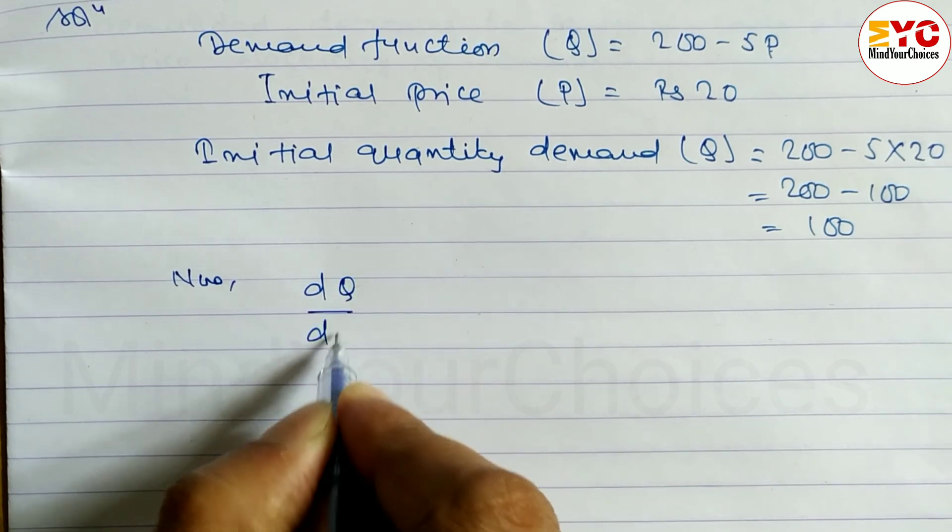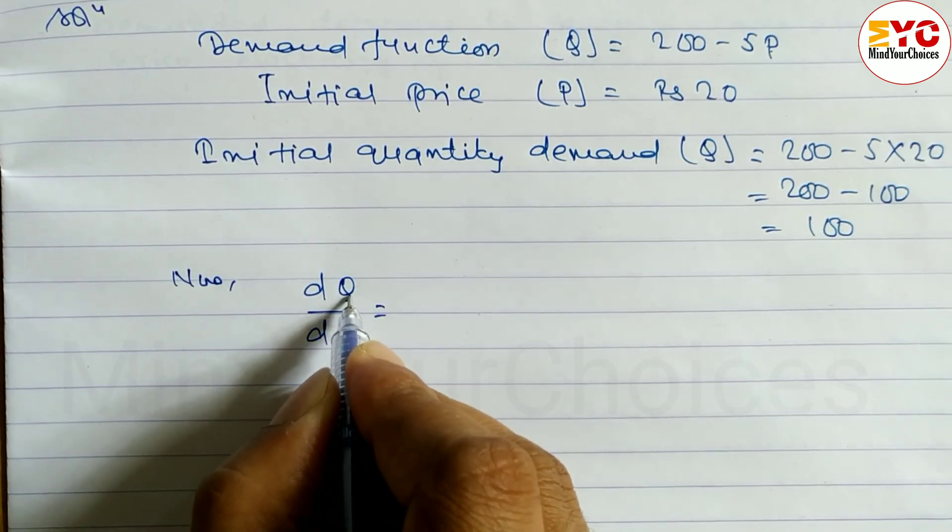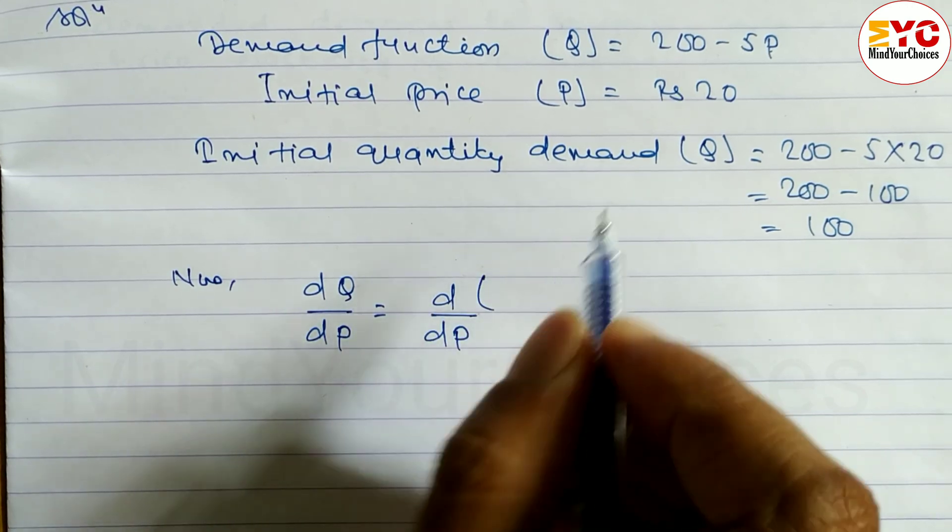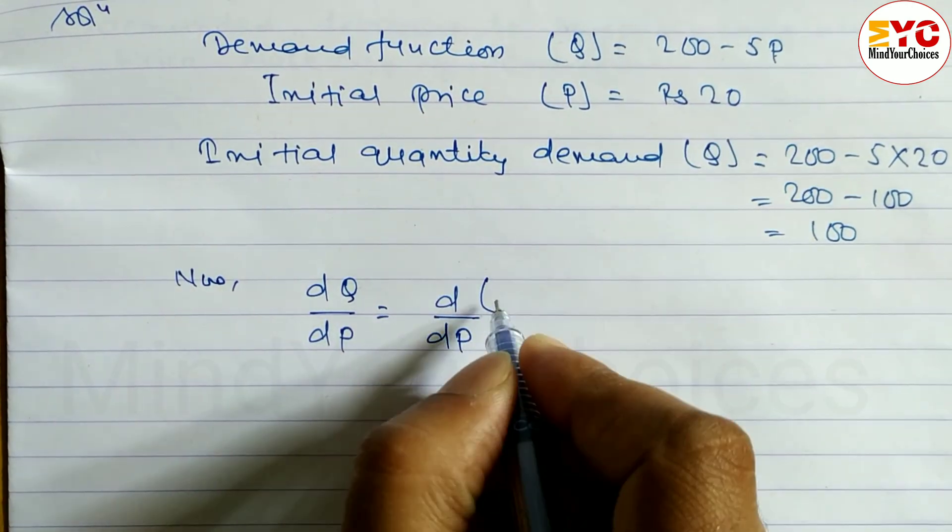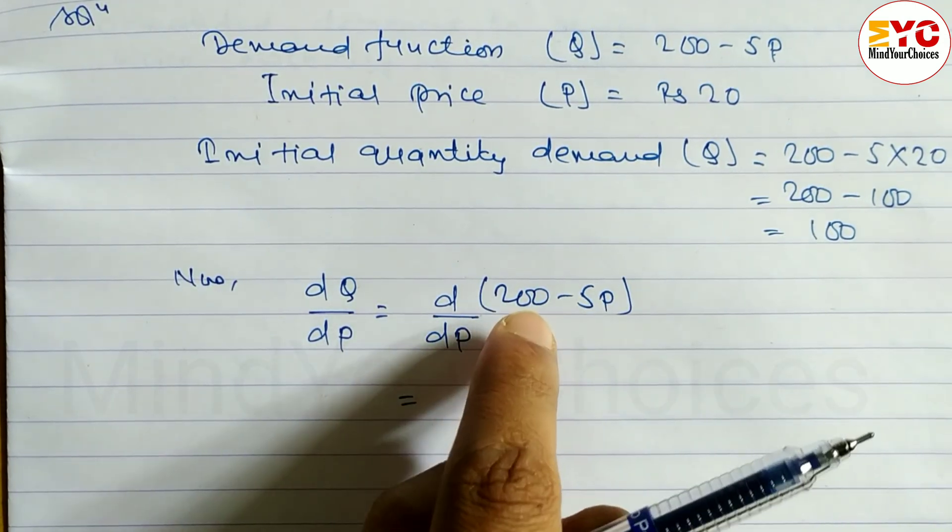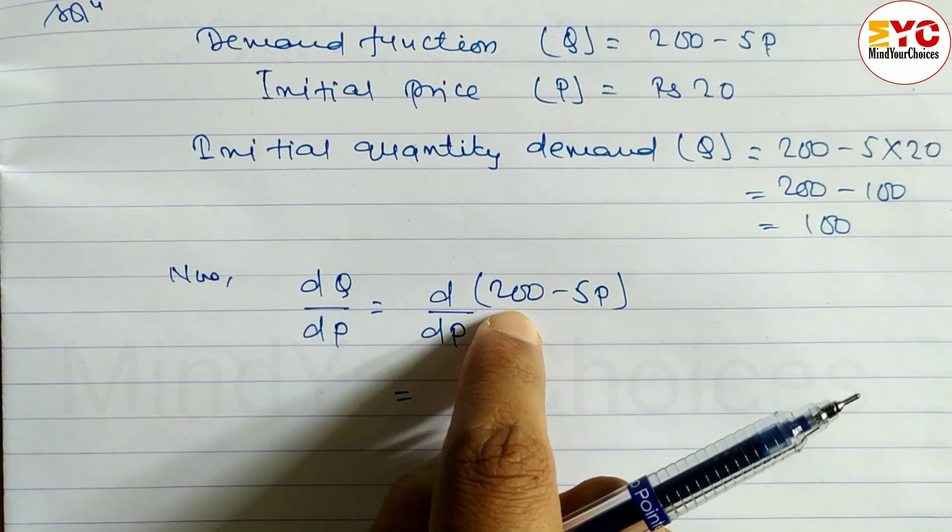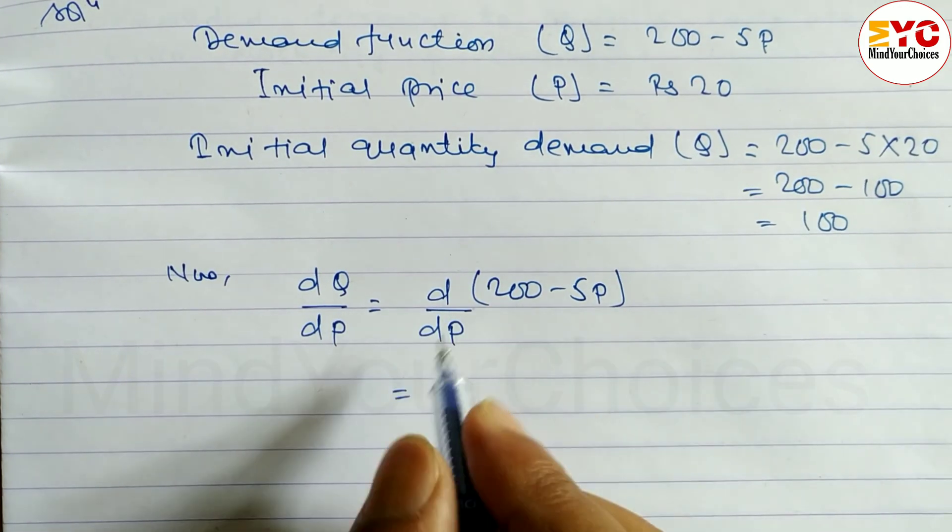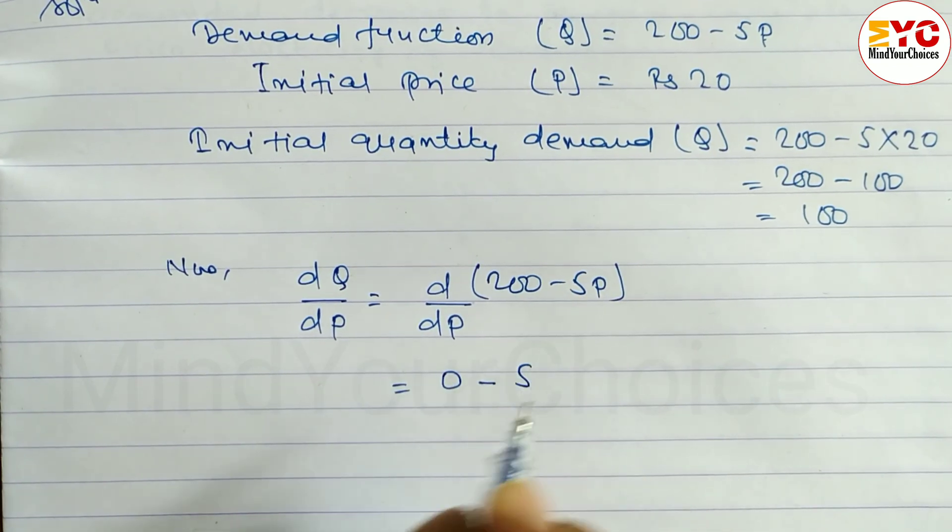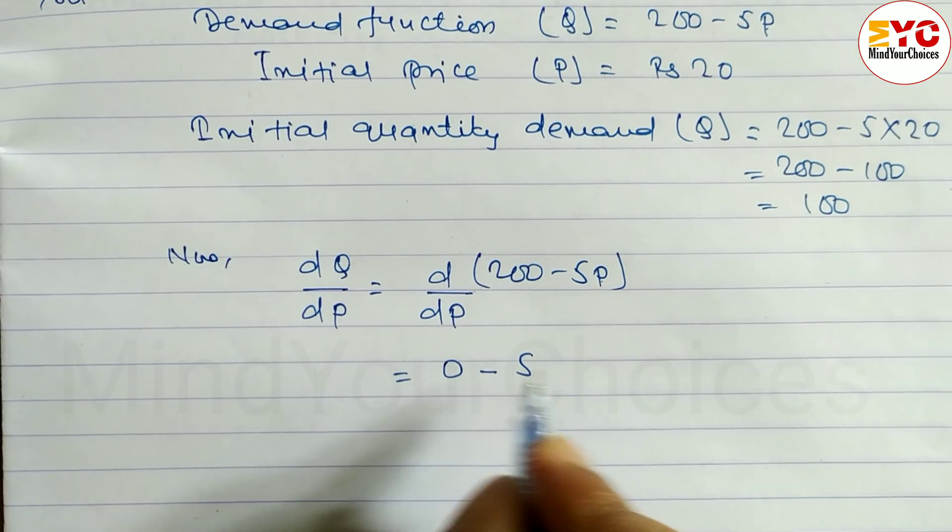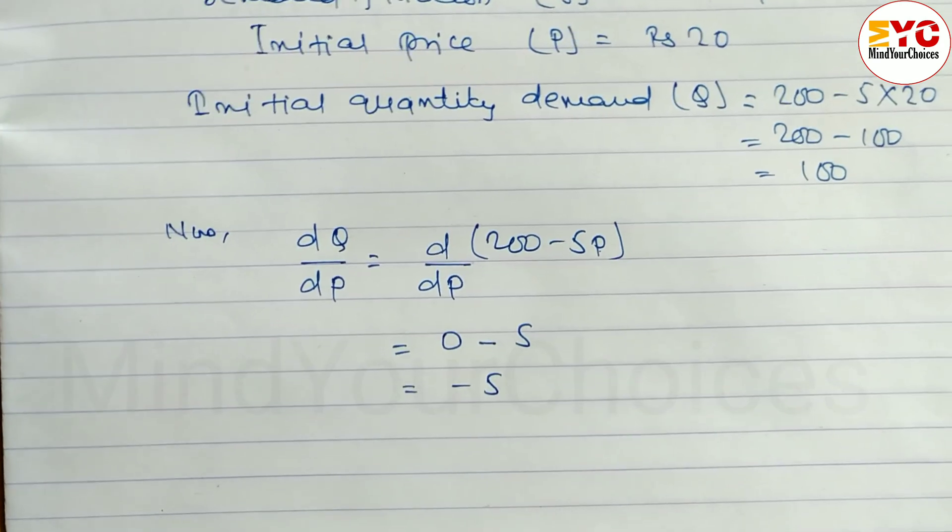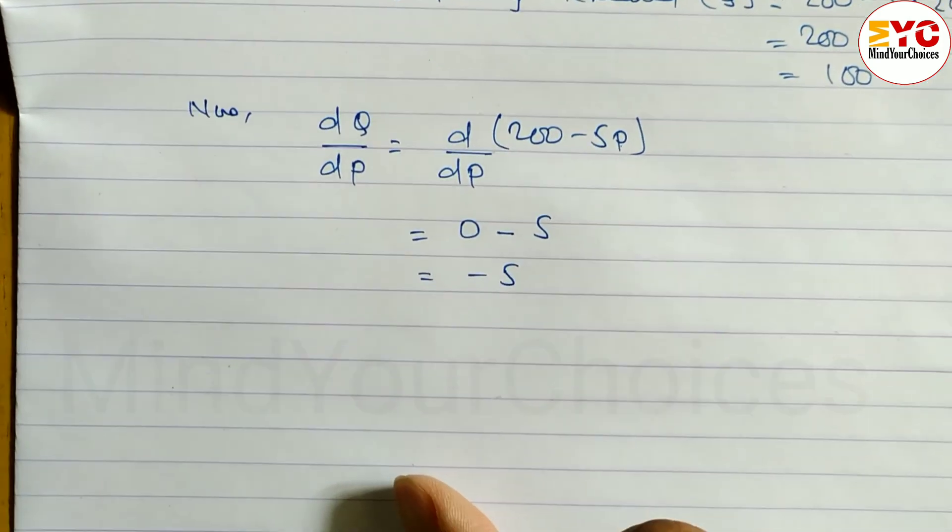Finding dQ by dP. The value of Q is 200 minus 5P. The derivative of 200 is 0 since it's a constant. The derivative of 5P is 5, so dQ by dP equals minus 5.